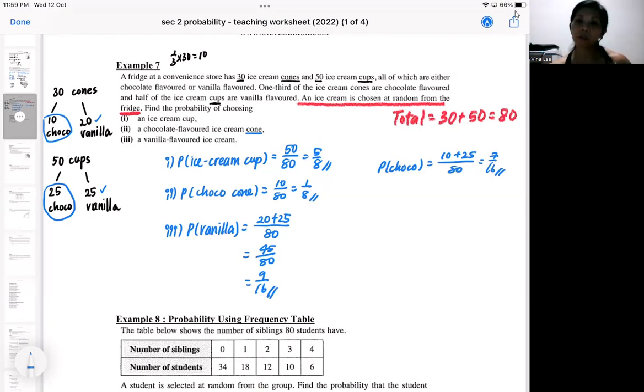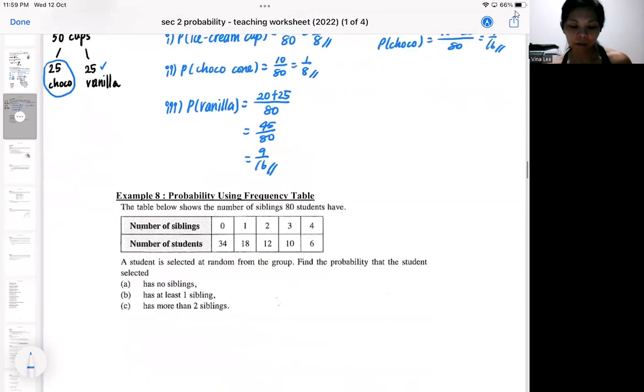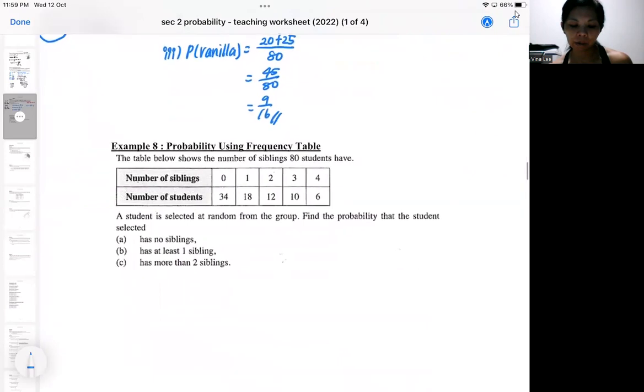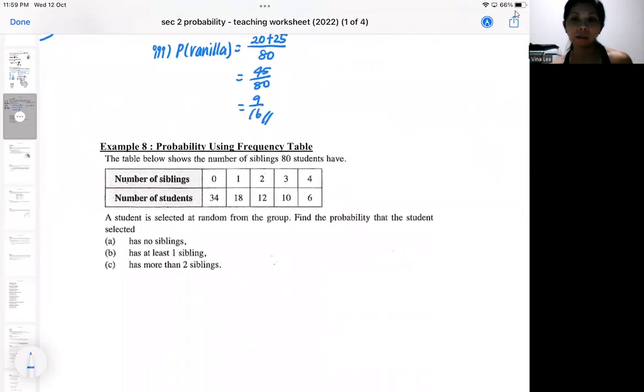So we got to read carefully exactly what they want. So this kind of question, just read and organize your information. It shouldn't be too difficult unless you miss out information. Example 8 is the kind where you use frequency table. So if you are using frequency table, you've got to be mindful of the language and also mindful of what is the table telling you. So if you look carefully, this table below shows the number of siblings 80 students have. So you imagine there's 80 students in front of you. Maybe you can visualize there are two classes of students.